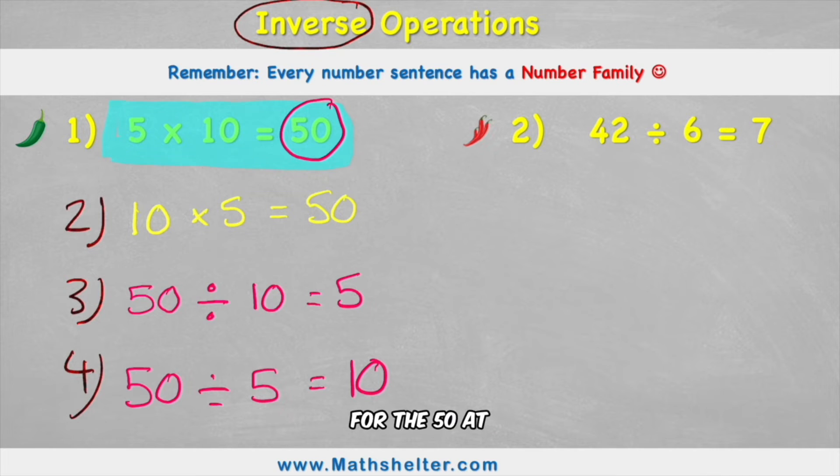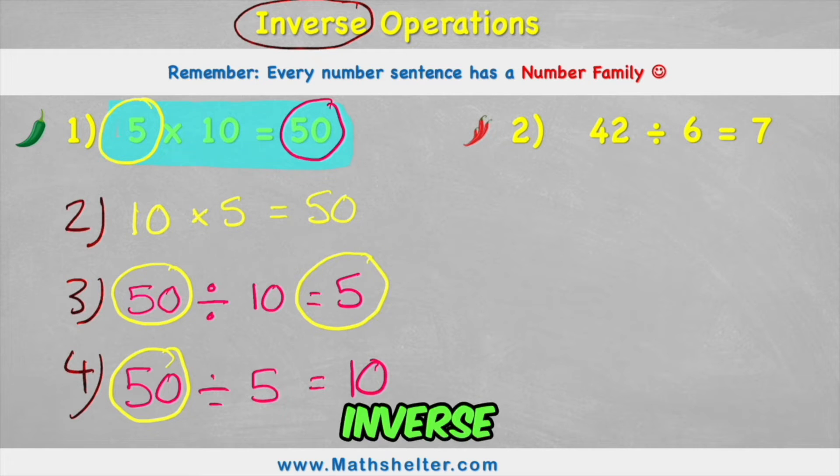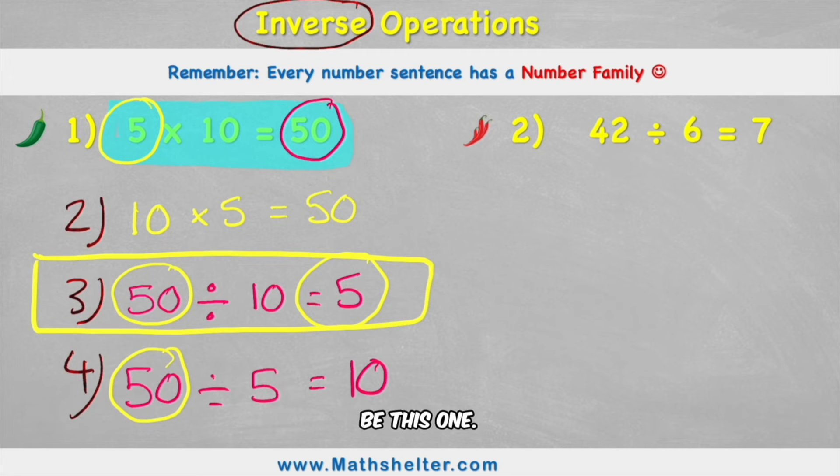In this one we have the 50 after the equal sign. So if it's going to be opposite, we're looking for the 50 at the beginning. So it's going to be one of these two. Then we have 5 at the beginning. So we're looking for 5 at the end. So I think we've managed to find our inverse operation, and our inverse question would be this one.